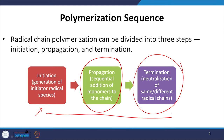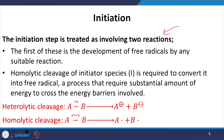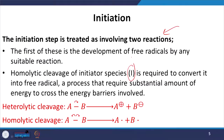Let us have a look at the initiation steps. Usually, when we carry out the initiation process, it is treated as two reactions in series. The first of these is the development of a free radical by any suitable reaction, involving the homolytic cleavage of initiator species I, which requires a substantial amount of energy to cross the energy barrier involved.